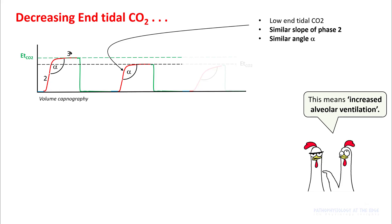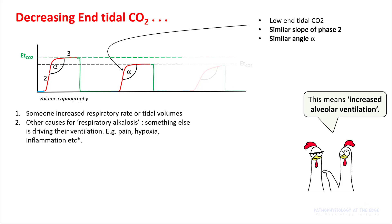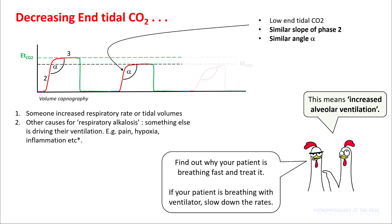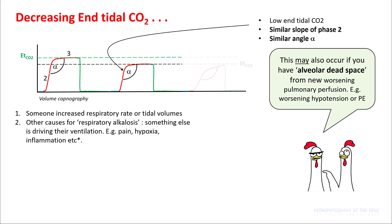First, you can have a similar-looking capnogram with similar slope of phase 2 and similar angle alpha. This means there is increased alveolar ventilation, which can come either from your patient breathing faster or from you making the patient breathe faster. If your patient is breathing faster on their own, figure out why and treat it. If you are causing the patient to hyperventilate, slow down the respiratory rate. In these cases, your PaCO2 will be equal to your end-tidal CO2. However, there is an exception: the capnogram may look similar with lower end-tidals if you have worsening pulmonary perfusion, meaning you are developing alveolar dead space.